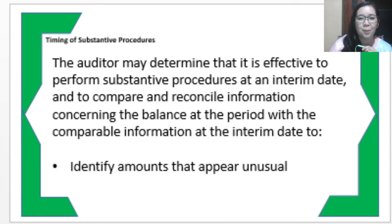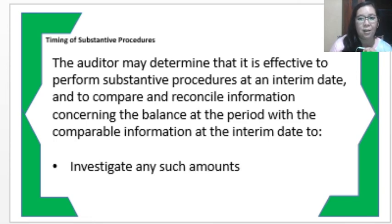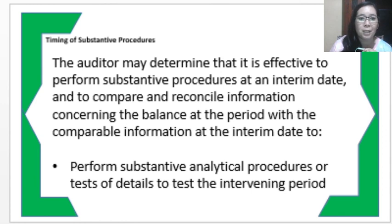Regarding the timing of substantive procedures, the auditor may determine it is effective to perform them at an interim date if internal controls are effective. In this case, the auditor will compare and reconcile information about the balance at the period end with comparable information at the interim date to identify any amounts that appear unusual or where deviations exist. If such deviations are identified, the auditor will investigate those amounts and perform substantive analytical procedures or test of details to test the intervening period for consistency.